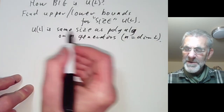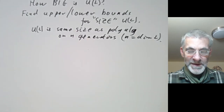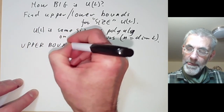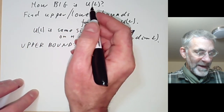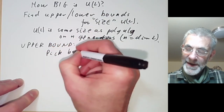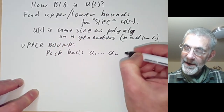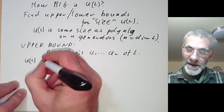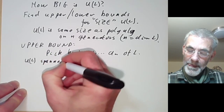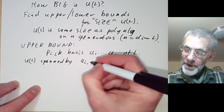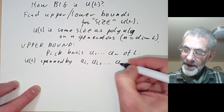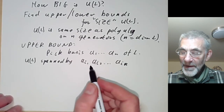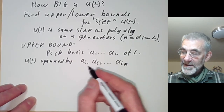We need to explain what 'same size' means. Let's start by finding an upper bound for U(L) — this is quite easy. We pick a basis a₁ up to aₙ of L. We note that U(L) is certainly spanned by elements aᵢ₁ aᵢ₂ ··· aᵢₖ for all sequences i₁ up to iₖ of integers. However, we can do better than this — this spanning set is really too big, and we want to cut it down.